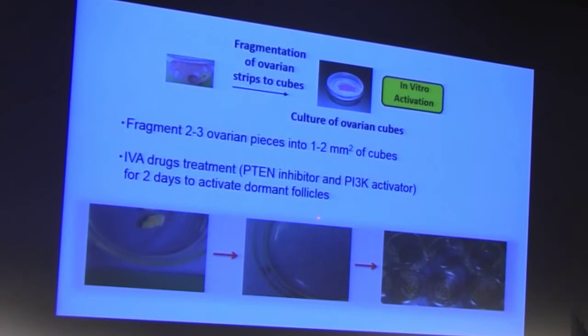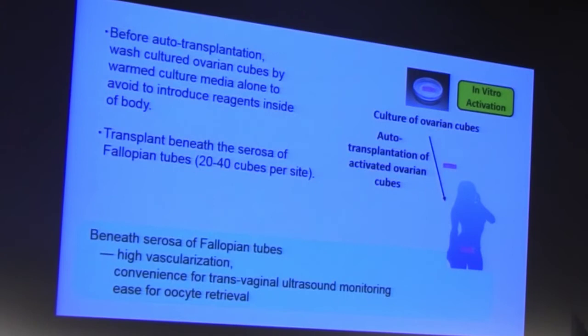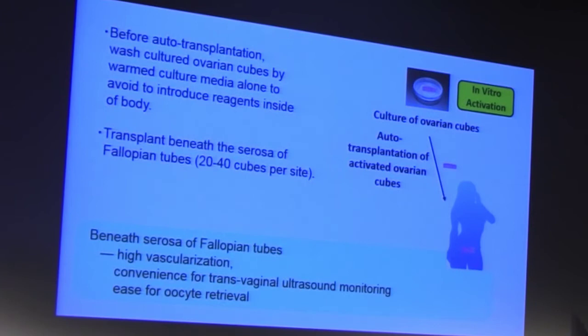The ovarian pieces are cut into tiny cubes and placed on the membrane of a cell culture insert, covered by a very thin layer of media to allow tissue culture. Before transplantation, we wash and culture the ovarian cubes in culture media alone to avoid introducing reagents into the body. We then transplant these ovarian cubes beneath the serosa of the fallopian tubes — 20 to 40 cubes per site — a site chosen for its high vascularization, convenience for transvaginal ultrasound monitoring, and ease of oocyte retrieval.